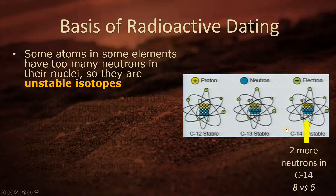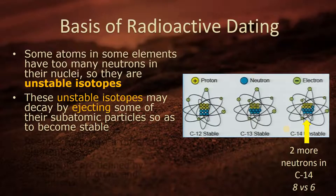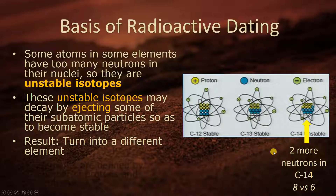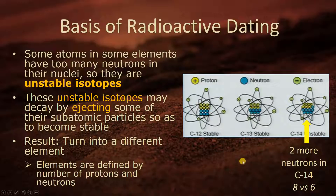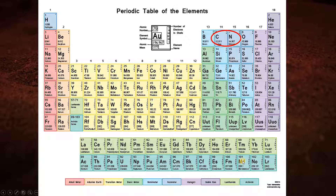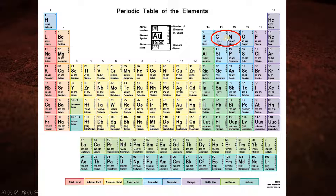Carbon-13 has six protons and seven neutrons. But when we get to carbon-14, it has eight neutrons versus six protons, and it means it's unstable. Some atoms have too many neutrons in their nuclei, so they are unstable isotopes. These unstable isotopes may decay by ejecting some of their subatomic particles so as to become stable. The result: they turn into a different element. We'll show later that carbon-14 will radioactively decay to nitrogen.